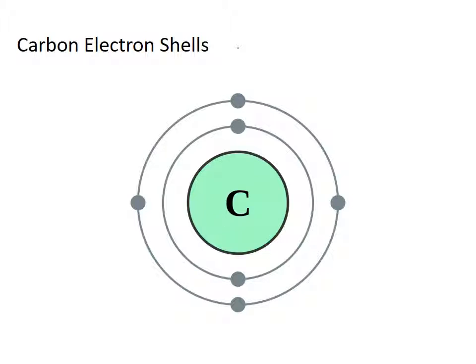This allows carbon to share those four electrons with four other elements — it can make four covalent bonds. That makes carbon kind of like a building block, almost like a Lego. We can put it together in a lot of different configurations because of these four valence electrons.